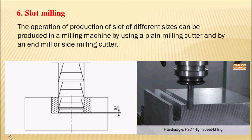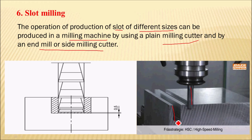Next is the slot milling operation. The name itself indicates that it is an operation for the production of slots. Slots of different sizes can be produced in a milling machine using plain milling cutters or end mill milling cutters.